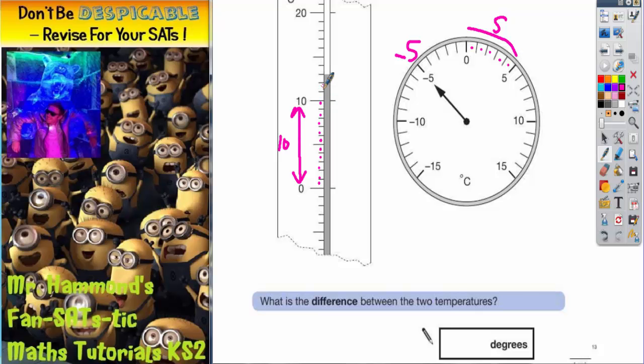So we've got 9, 10, 11, 12, 13. So the reading on that thermometer is 13.